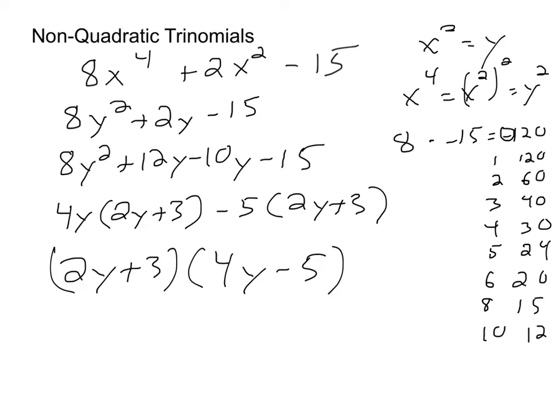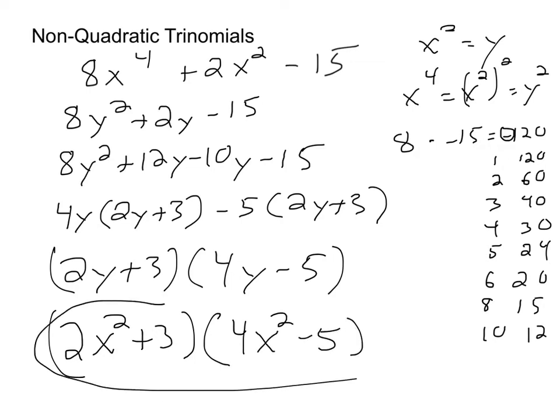And it looks like I'm done, but I actually have to remember that my original problem involved x's and not y's. So I'm going to come back to my x squared equals y and replace my final answer here. Instead of 2y plus 3, it's going to be 2x squared plus 3. And instead of 4y minus 5, it's going to be 4x squared minus 5. And that's actually going to be my final answer right there. I can't break down either of those any further. And that'll be it.